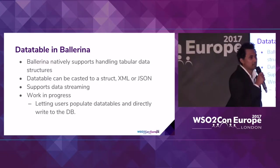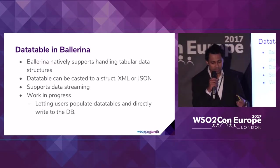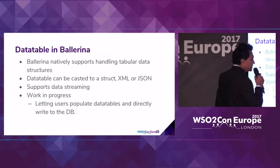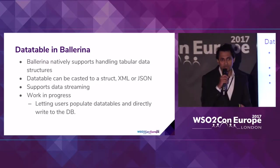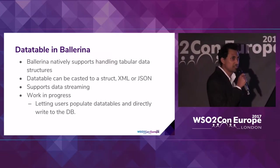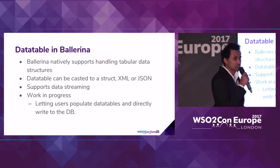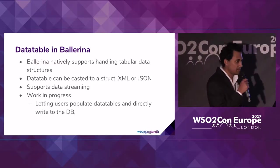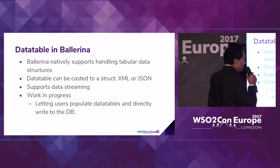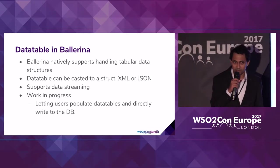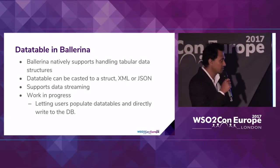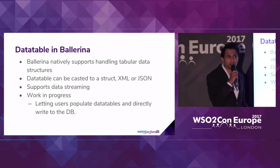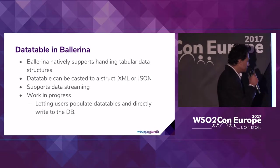For instance, if you take a table in some SQL database, it could have millions of records, and a simple select query can return thousands of records. So if you take all those thousands of records into an API and try to convert them into some XML, there's a chance of going out of memory. But that's not the case in Ballerina, because Ballerina supports data streaming.